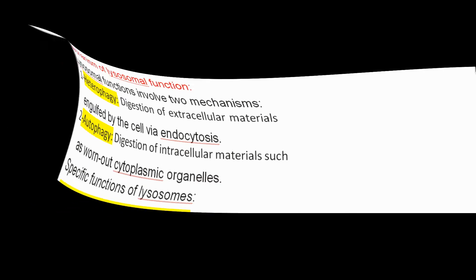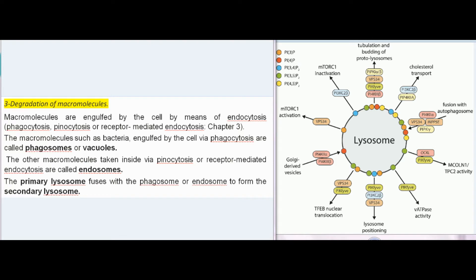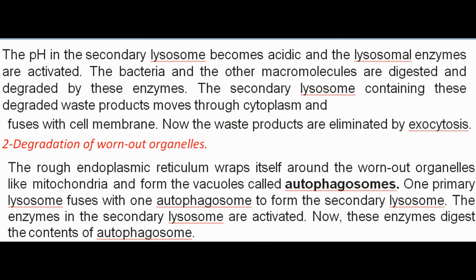Specific functions of lysosomes include degradation of macromolecules. Macromolecules are engulfed by the cell via endocytosis — phagocytosis, pinocytosis, or receptor-mediated endocytosis. Bacteria engulfed via phagocytosis form phagosomes. The primary lysosome fuses with the phagosome or endosome to form a secondary lysosome, whose pH becomes acidic, activating lysosomal enzymes. The bacteria and macromolecules are digested and degraded, and the secondary lysosome moves through the cytoplasm, fuses with the cell membrane, and the waste products are eliminated by exocytosis.